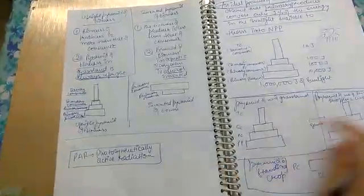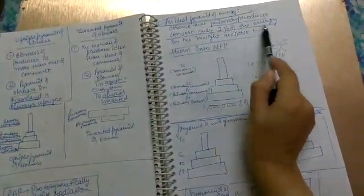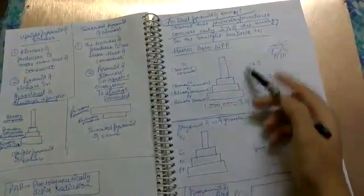PAR: photosynthetic active radiation. An ideal pyramid of energy observes that primary producers convert 1% of energy in the sunlight available to them to NPP.